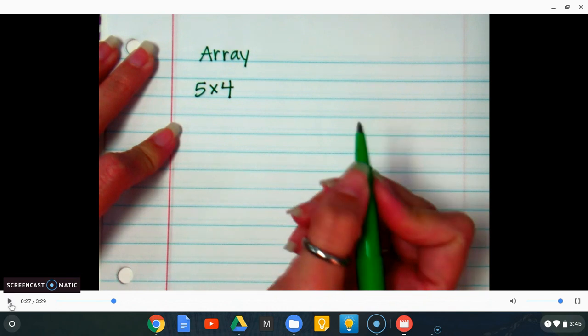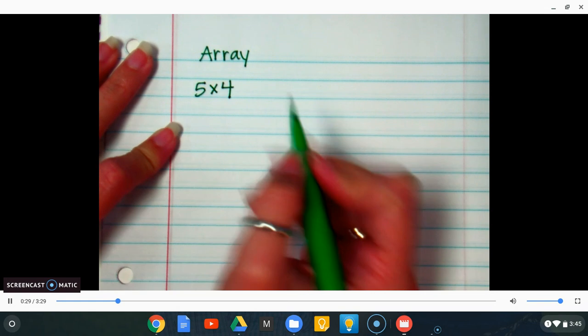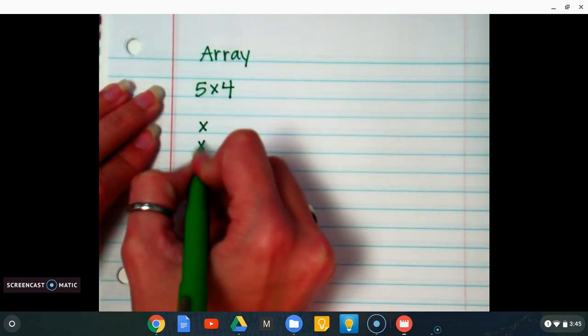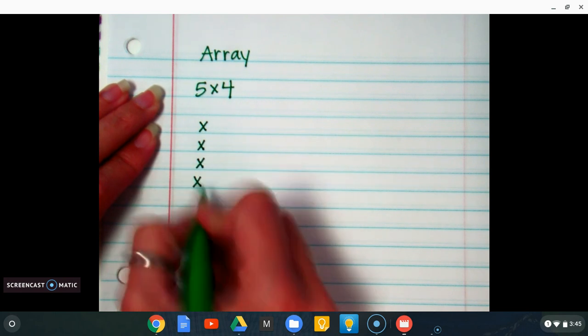We are going to do the multiplication fact 5×4. So with the array, the first number tells you how many X's (or whatever you choose to draw) goes down. My first number is 5, so I'm going to do 1, 2, 3, 4, 5.